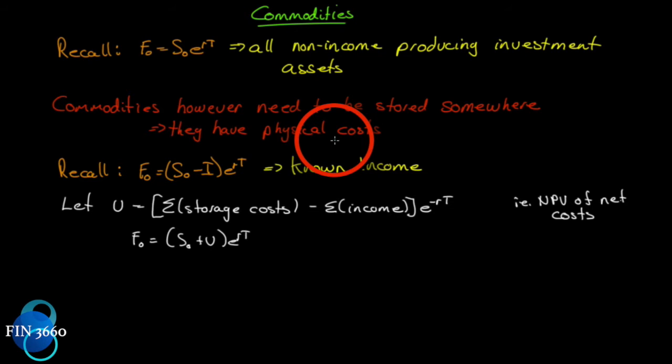With commodities, however, whether they be investment commodities like gold, silver, platinum, or the consumption commodities we're also very familiar with - copper, live hogs, live cattle, corn, wheat, any of the metals, any of the agricultural products - well, you've got to put them somewhere. You can't just buy them and let them hold out in space. So let's modify the formula that we already know.